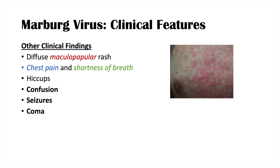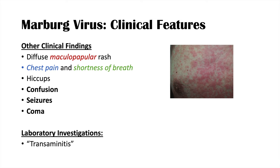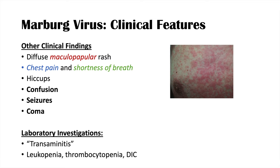Laboratory investigations in a Marburg virus infection include transaminitis — elevated transaminases such as ALT and AST from liver damage. We also see leukopenia (low white blood cells), thrombocytopenia (low platelets), and disseminated intravascular coagulation. The DIC and thrombocytopenia are linked, as platelets are destroyed by the DIC process. DIC findings include increases in PT, PTT, and INR, as well as decreased fibrinogen and an elevated D-dimer.